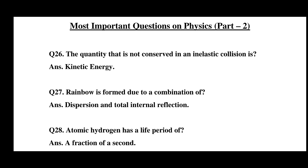Question number 27. Rainbow is formed due to a combination of? The answer is dispersion and total internal reflection.